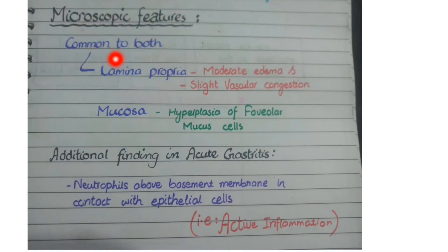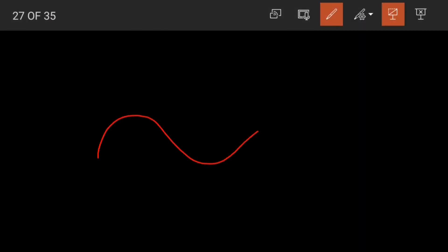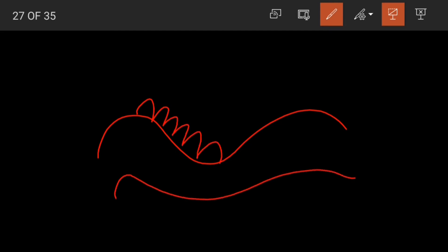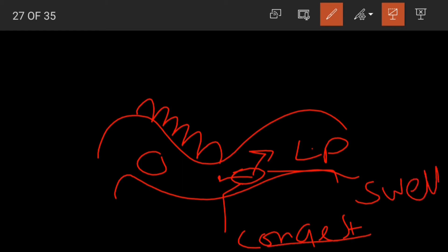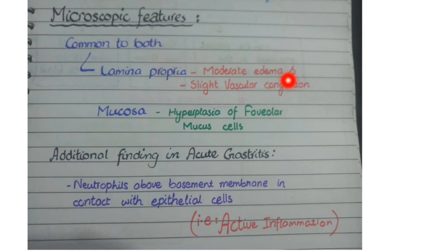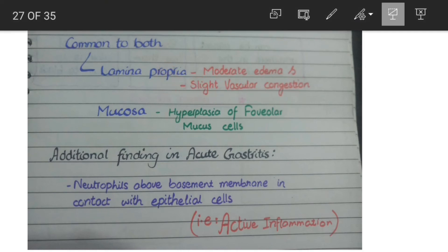The microscopic features common to both gastropathy and gastritis are: the lamina propria shows moderate edema and slight vascular congestion, while the mucosa shows hyperplasia of foveolar mucous cells. The lamina propria contains a rich network of blood vessels; as a reaction to cell injury, these vessels become congested, and fluid leaks into the lamina propria causing swelling — hence congestion and edema in the lamina propria.